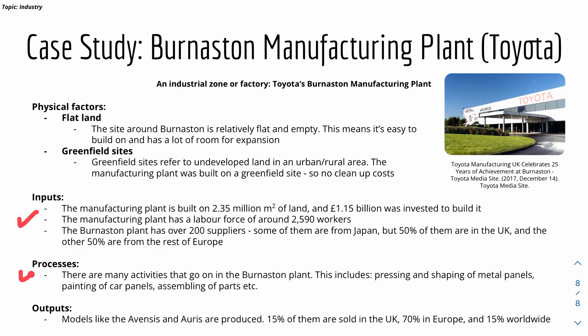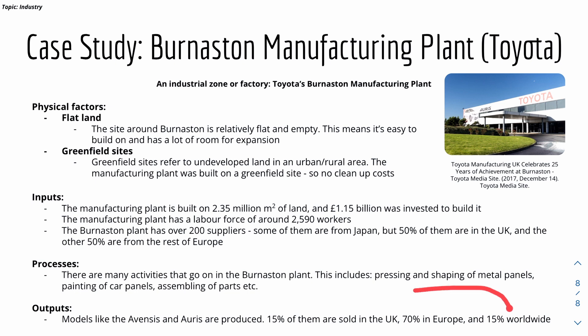Here are the inputs, processes, and outputs of the Toyota Burnaston manufacturing plant. Inputs include 2.25 million cubic metres of land, £1.15 billion invested to build it, around 3,000 workers, and over 200 suppliers from Japan, the UK, and Europe. The processes include pressing and shaping metal panels, painting car panels, and assembling parts — making this an assembly industry. For outputs, various Toyota car models are produced: 15% are sold in the UK, 17% in Europe, and 15% worldwide.